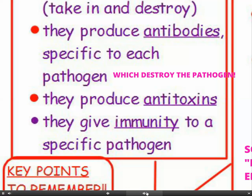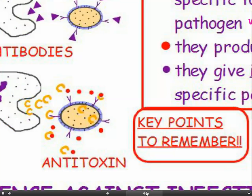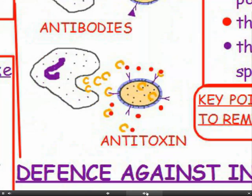Thirdly, white blood cells produce antitoxins which neutralise the toxins produced by the pathogen. Here you can see the pathogen making toxins — the nasty little red blobs which make us feel ill — and the white blood cell in response is producing antitoxins to neutralise those toxins.